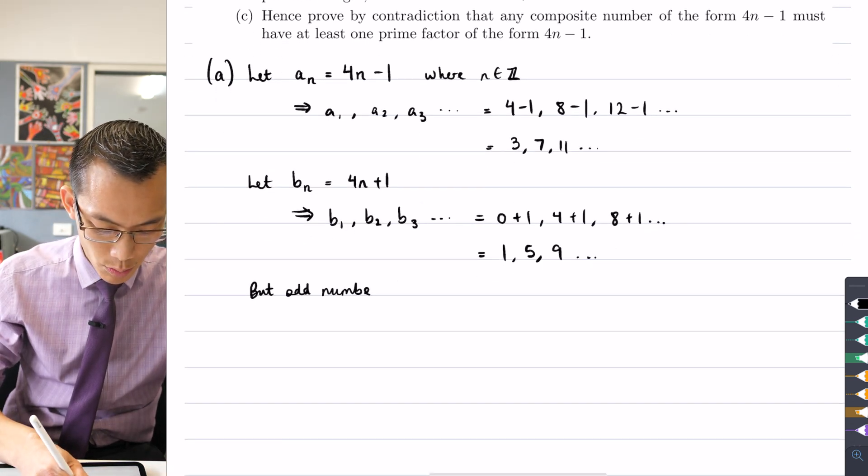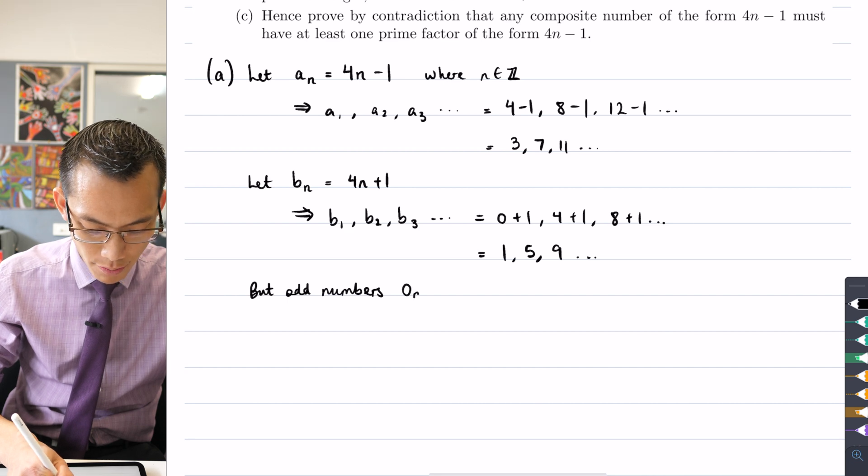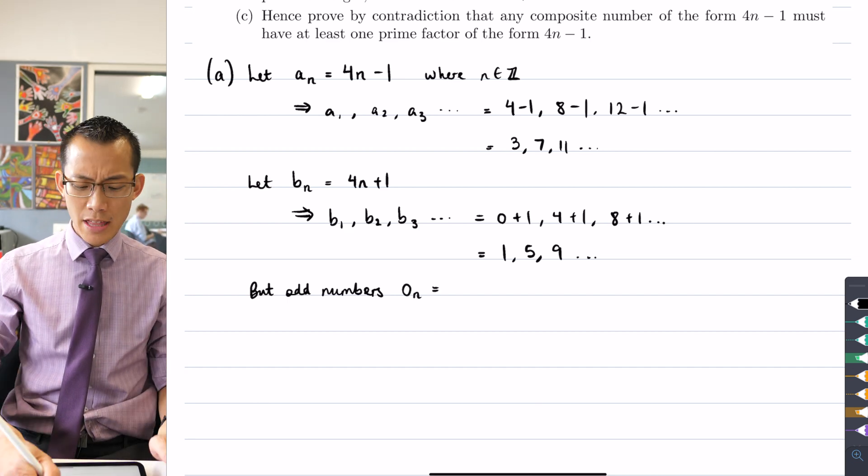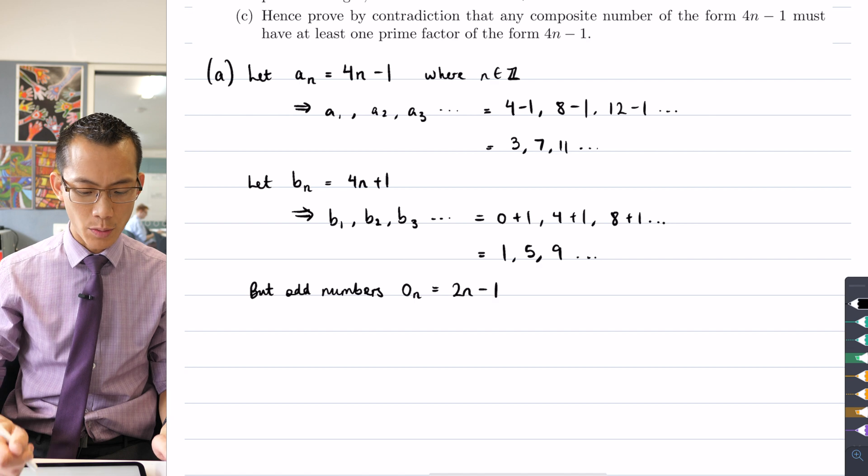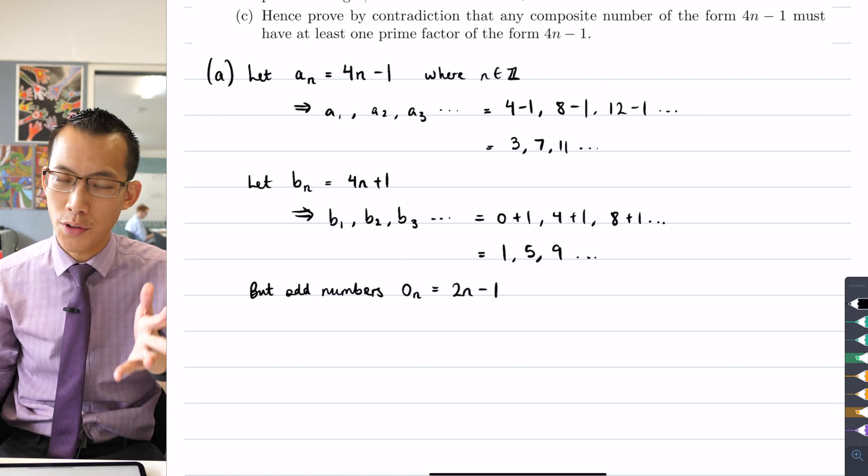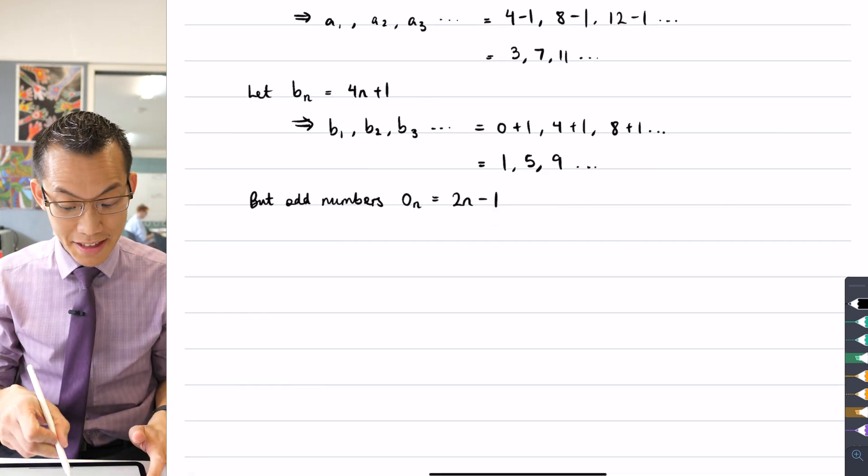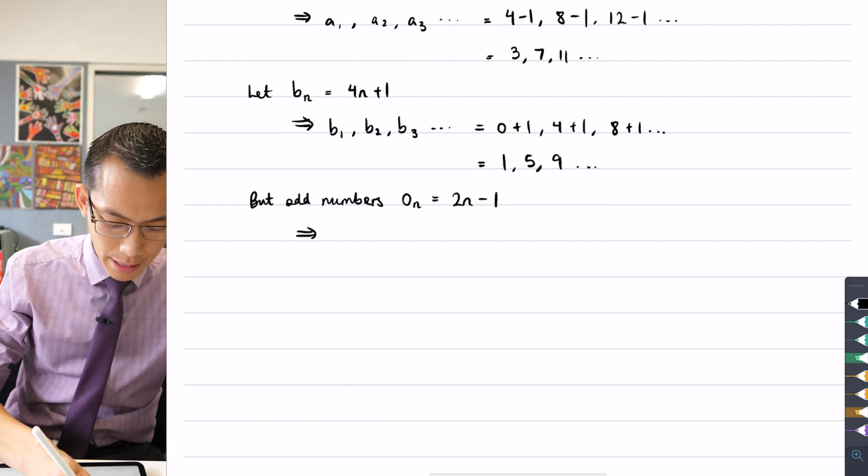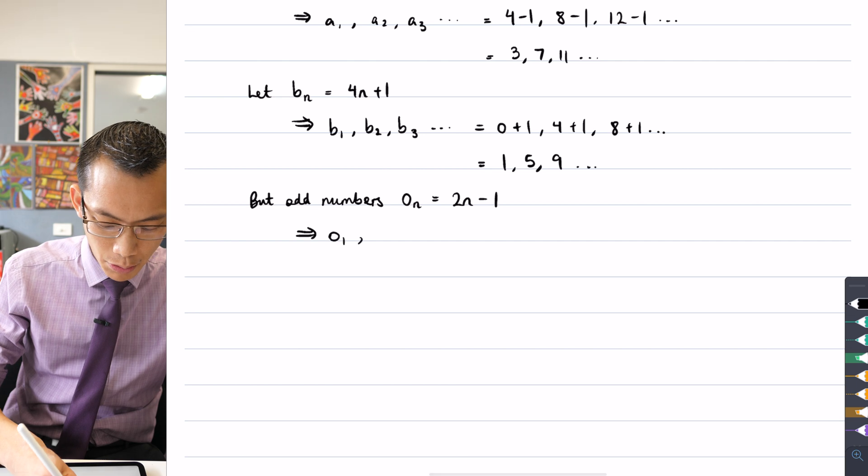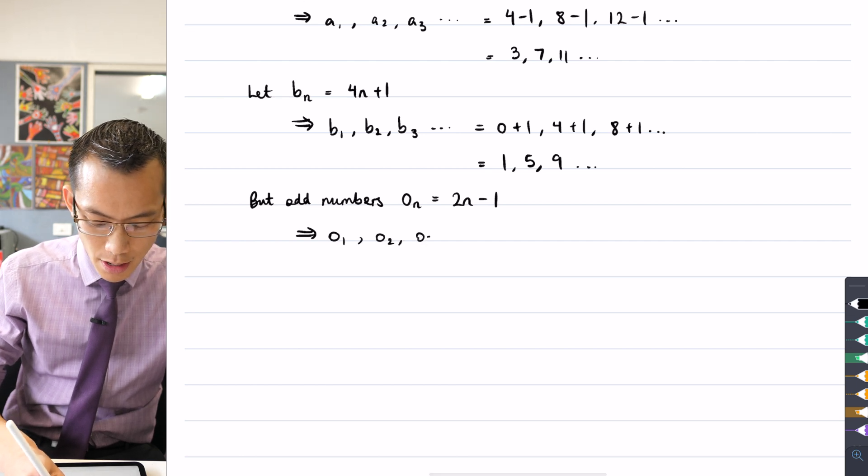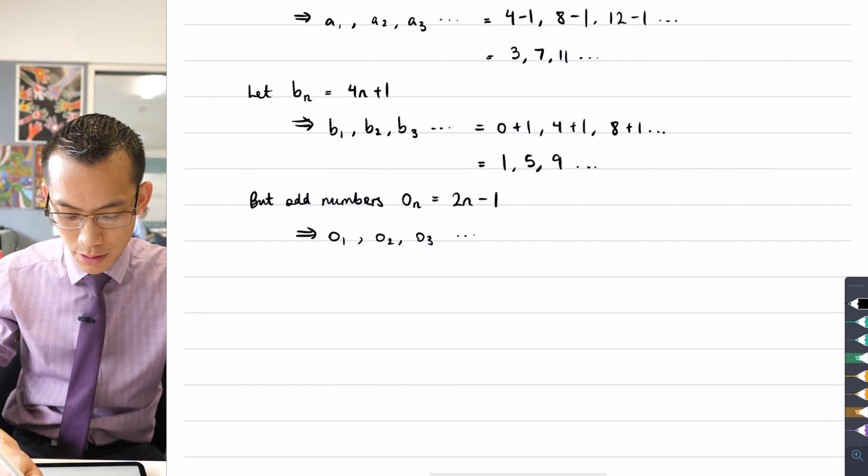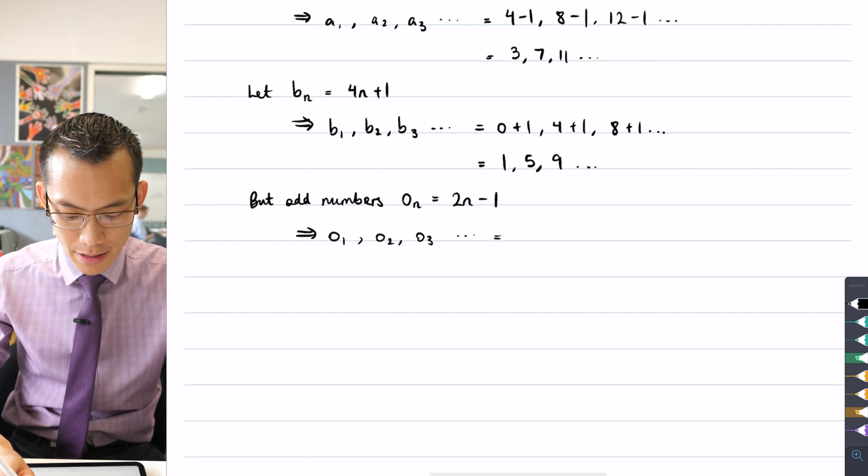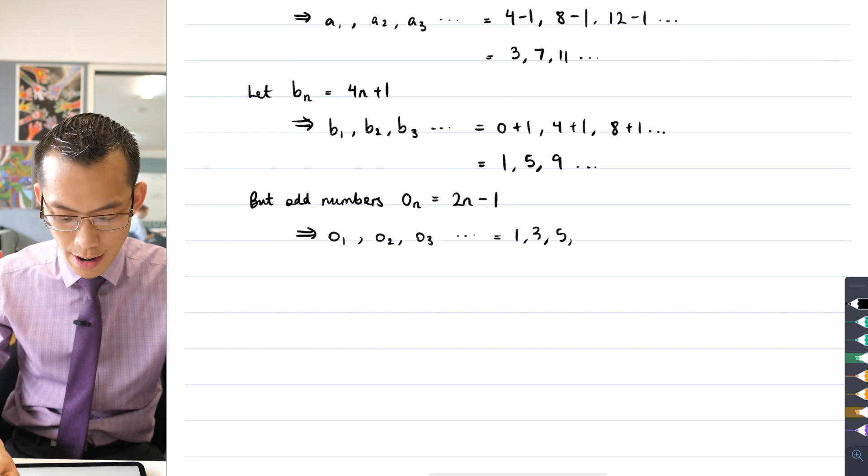The odd numbers, I guess I would call them O of N, the way that you would say them is they're 2N minus one. They're not based on multiples of four, they're based on multiples of two. They're all the even numbers take away one. So that implies the first three odd numbers, in fact I could do more than that.